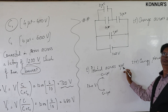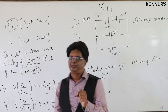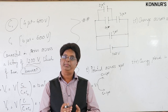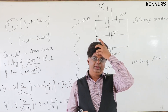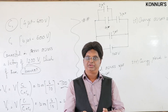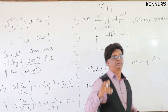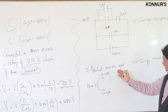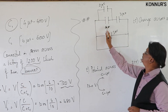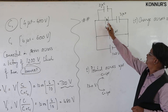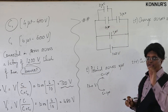The questions posed include: find the potential across 3 microfarad, charge on any capacitor, energy stored in any capacitor, total charge supplied by the battery, and total energy stored. You can frame six to seven questions from this network. The 2 and 4 microfarads are parallel; their result is in series with 3 microfarad; and again that result is parallel to 1 microfarad.